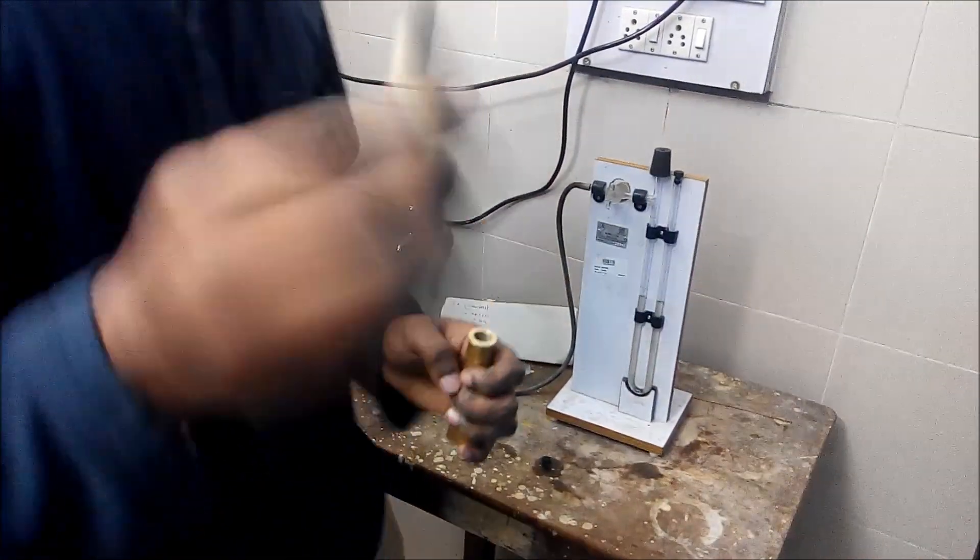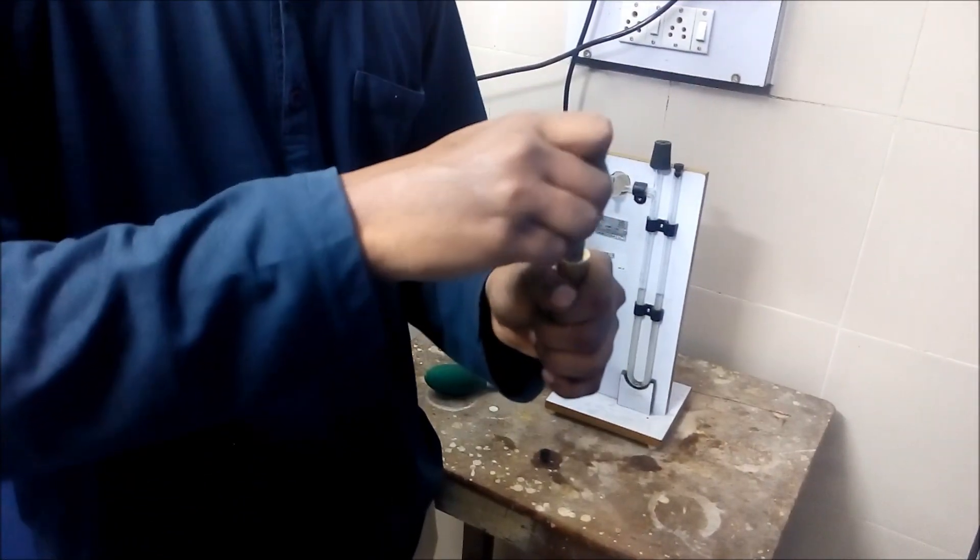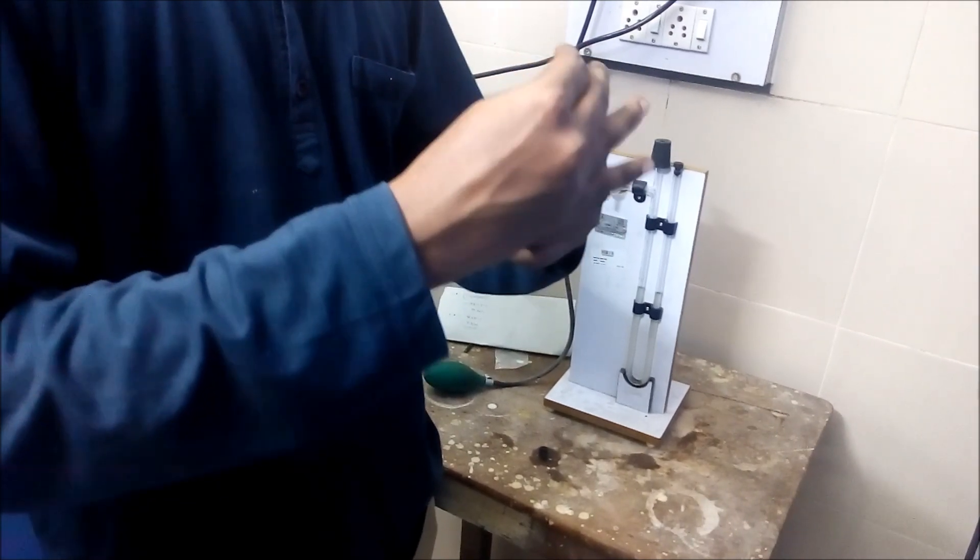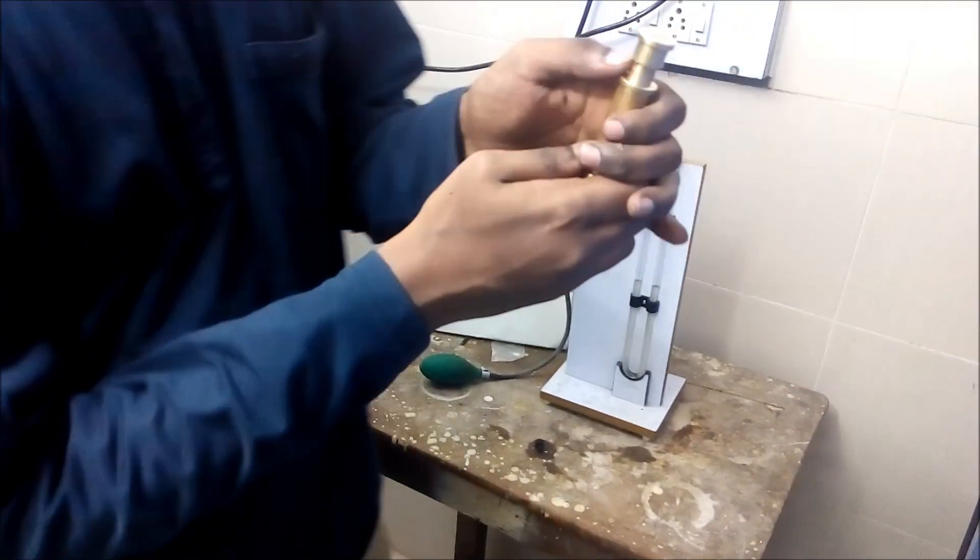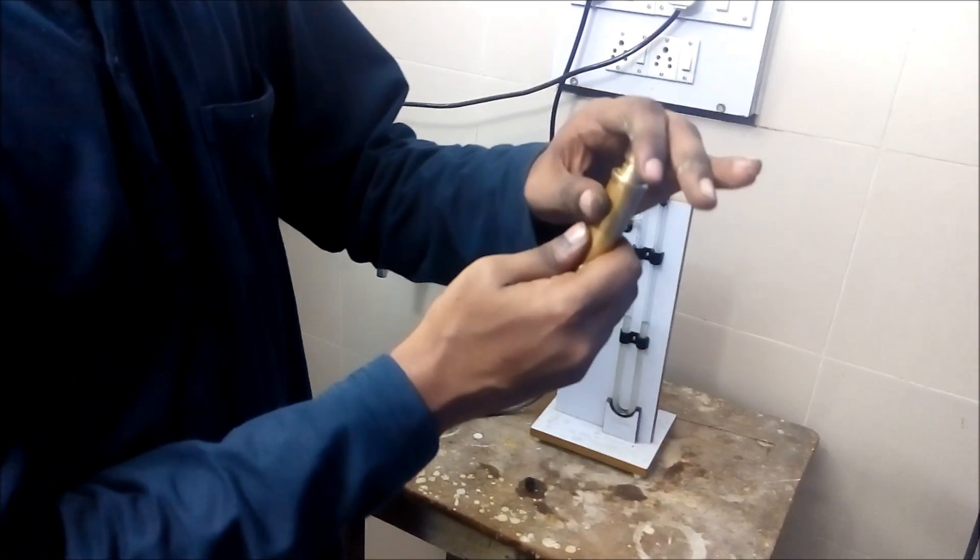And this is the plunger. With the help of this, the cement in this we can compress. And this is the collar of plunger. And this must be touches with the permeability cell.